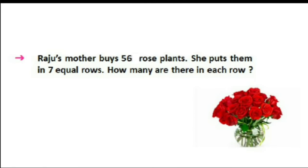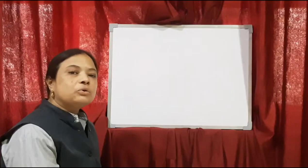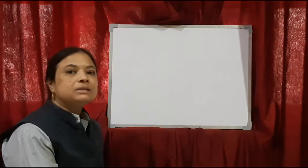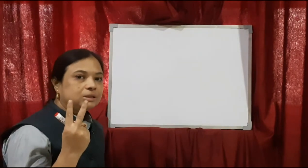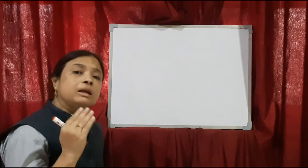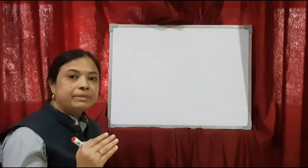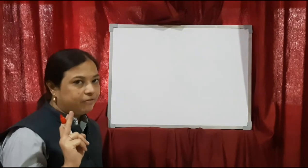Here two things are given: rose plants and rows. From these two things we will make our statement. Number of rose plants and number of rows. Then we will find out how many rose plants are there in each row. In multiplication sums we were finding two things and then writing the statement; in division sums we will do the same.